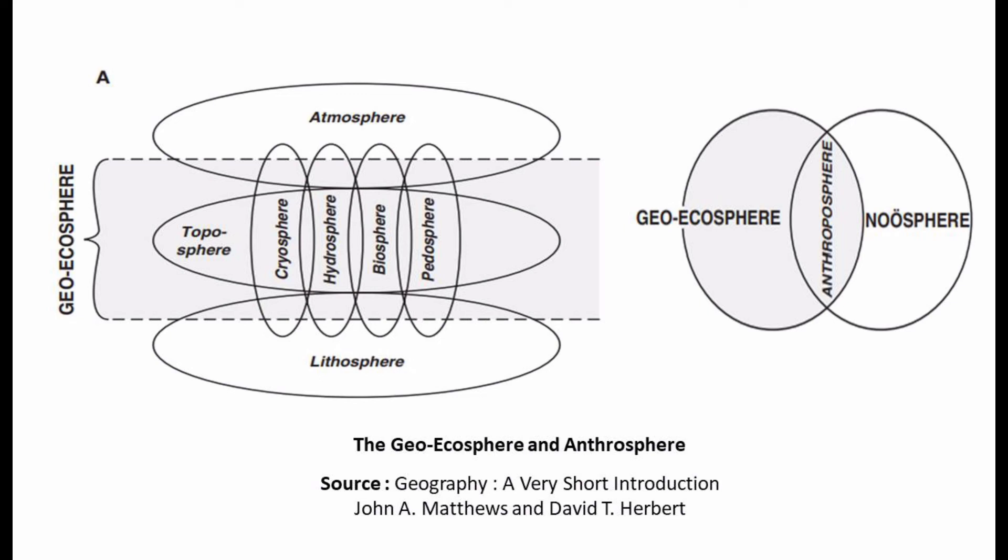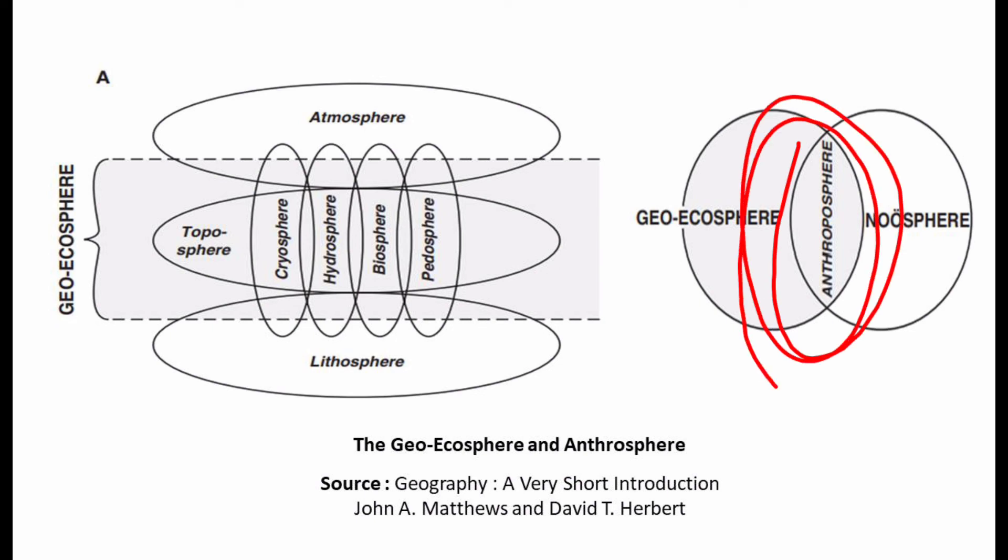The most important part of human activity is consciousness, mental ability, and perception. This all comes under the term 'Noosphere'. The sphere of human mental activity can be termed the Noosphere. Through mental ability and perception processes, the human modifies the Geoecosphere and thereby creates cultural landscapes, technological landscapes, and other cultural aspects.